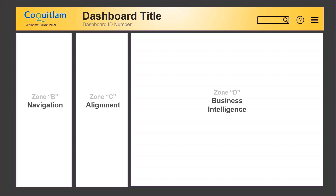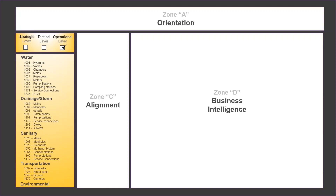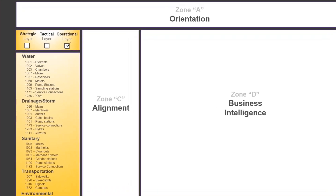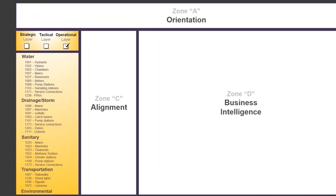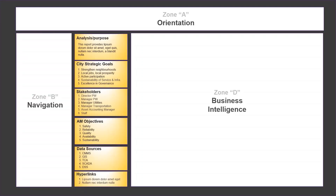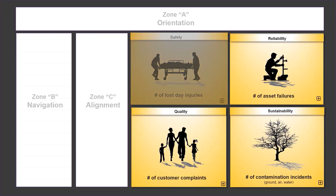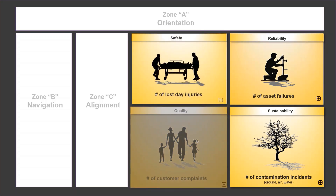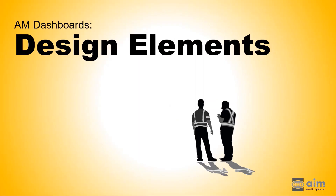Each of the four zones is assigned a specific function and together they work as a cohesive set. Zone A, at the top of the dashboard, orients the user by providing a dashboard title and other contextual reference information. Zone B contains an asset hierarchy enabling the user to navigate through the city's asset portfolio. Zone C reveals the degree of alignment between the business intelligence in Zone D and the organization's goals. Zone D contains scalable information windows that tell stories through a sequence of business intelligence charts or other analytics.